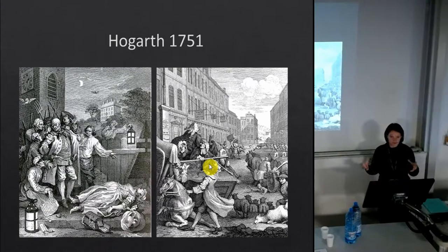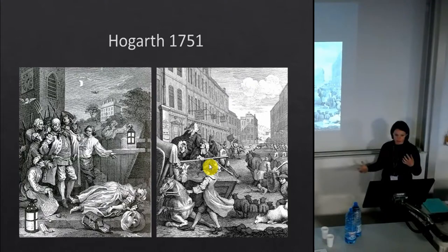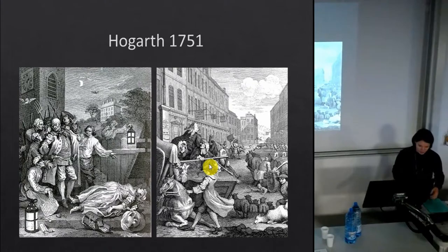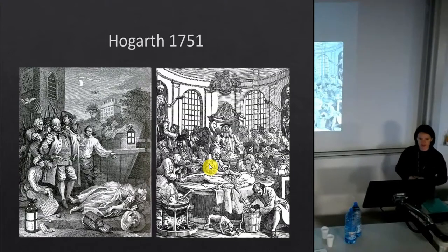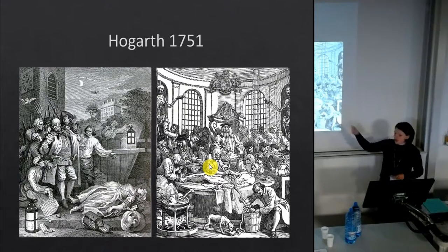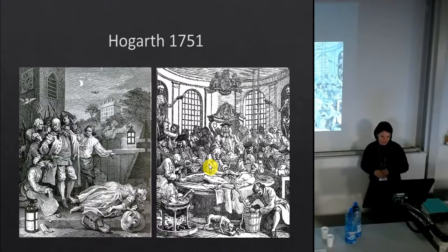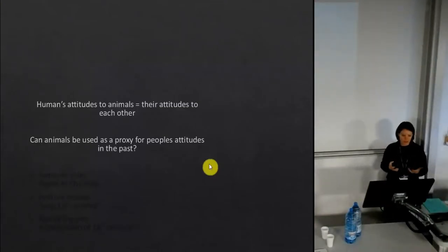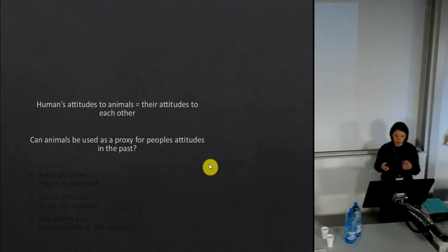As Tom Nero gets older, his violence toward animals changes into violence against people — he kills a woman in the street, is caught, sentenced to death, and is hung. Then doctors dissect his corpse in front of an audience. The moral of the tale is: do unto animals as you would be done by. So if we can suggest that humans' attitudes toward animals are a proxy for their attitudes toward each other, can we transfer this idea back into the past?